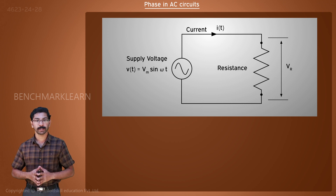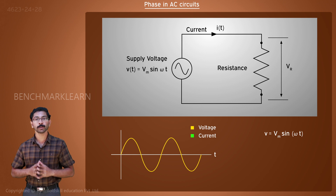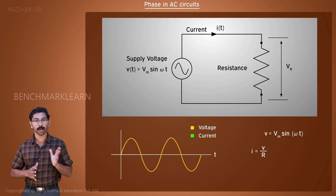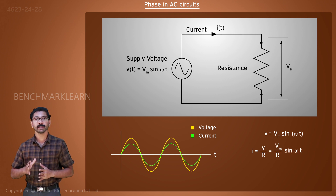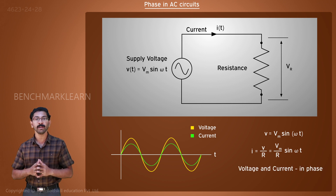What is the shape of the current? The voltage has a sine wave shape, that is, V equal to Vm sin omega t. We know that the current through a resistor can be obtained by Ohm's law, that is, I equal to V by R. So the equation for current becomes I equal to Vm by R into sin omega t. This means that the current through the resistor follows the voltage waveform, or we say that the voltage and current are in phase.